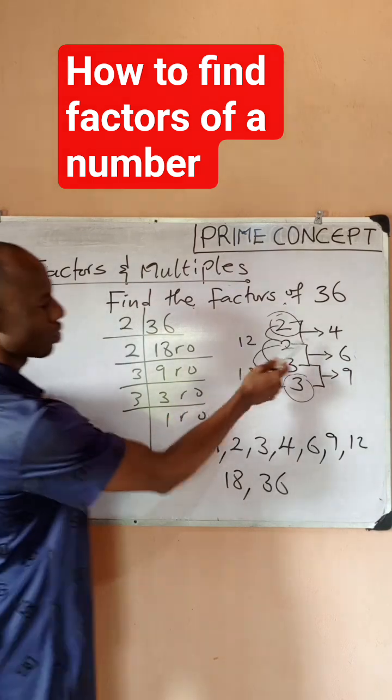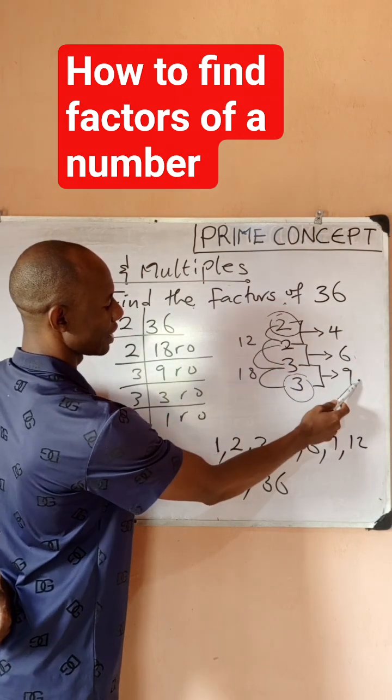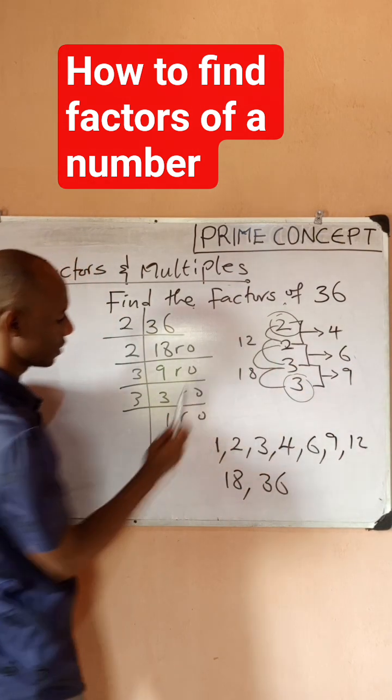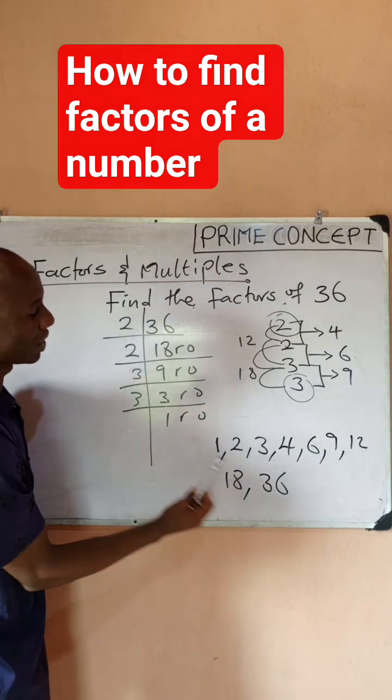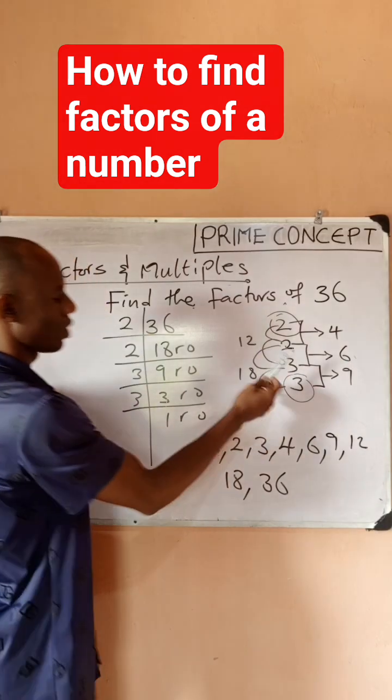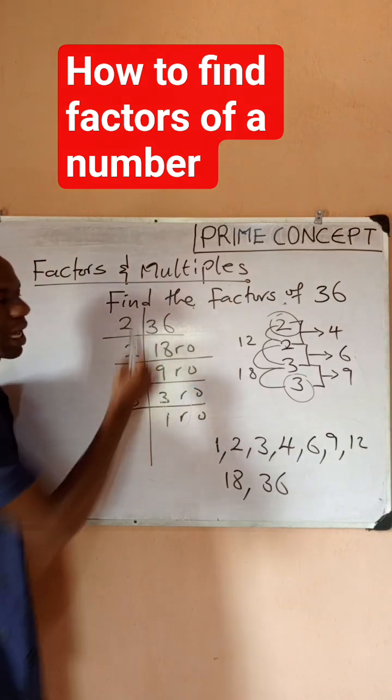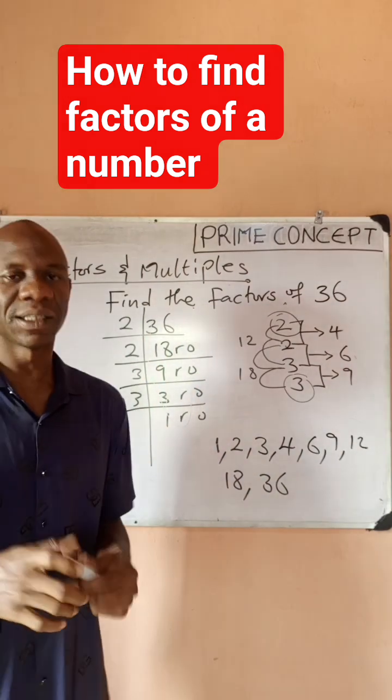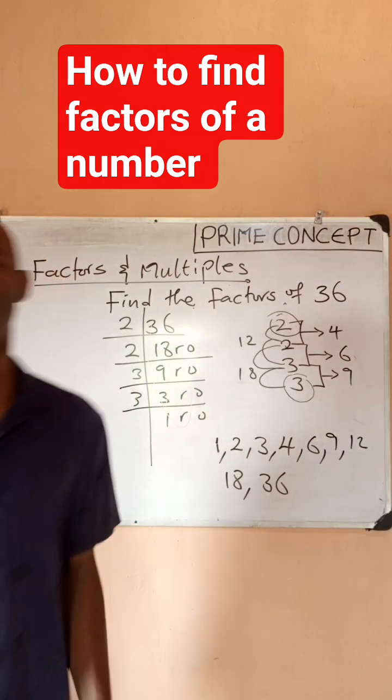So what I have just done is to combine 2, 4, 6, 9, 3, 18, 12. All these things are factors. Remember, we don't have to repeat, so these are the factors of 36 by combining what I have here. I believe this is clear. Thanks for watching Prime Concepts.